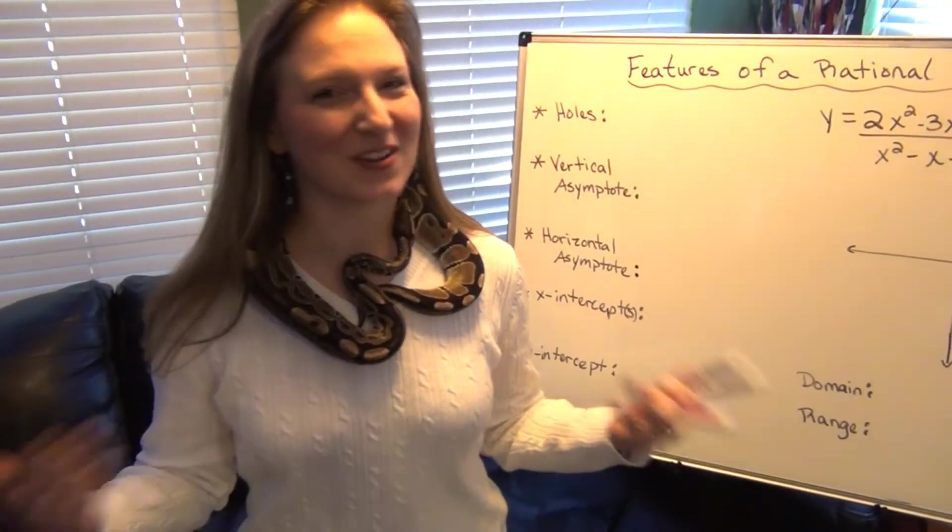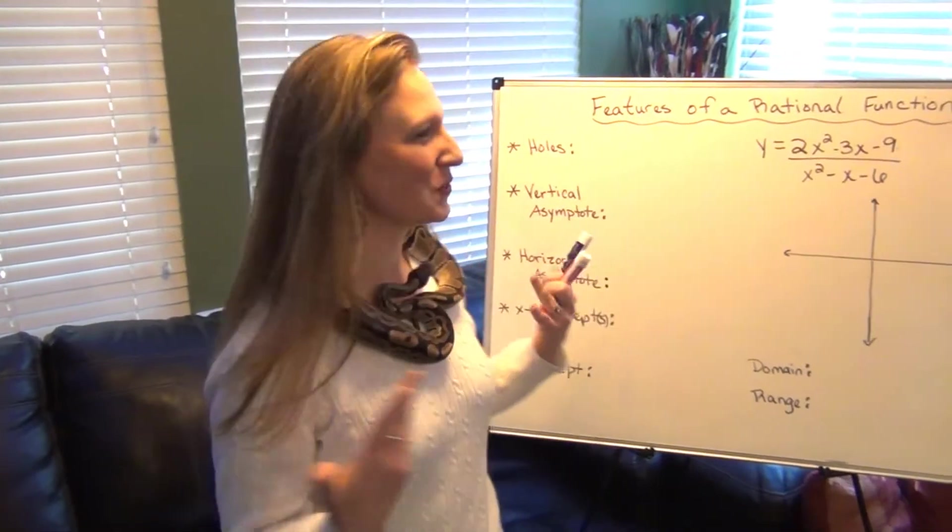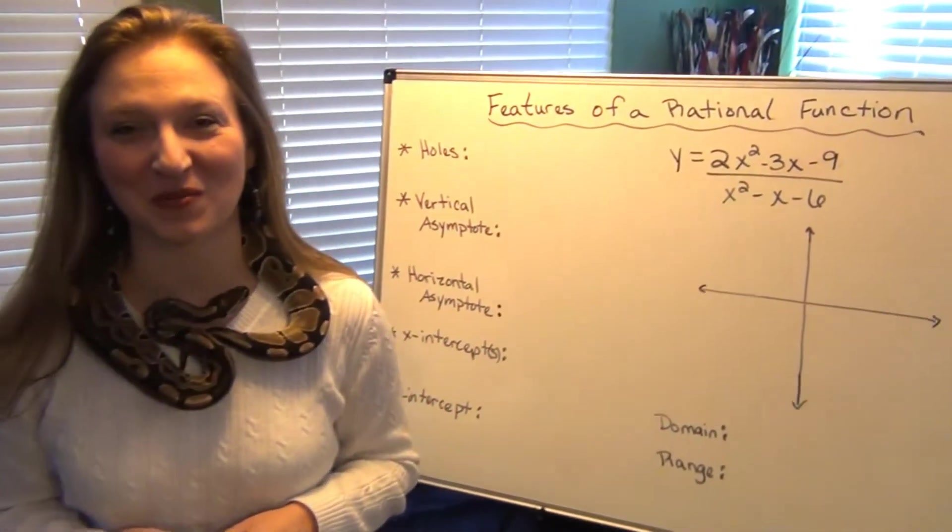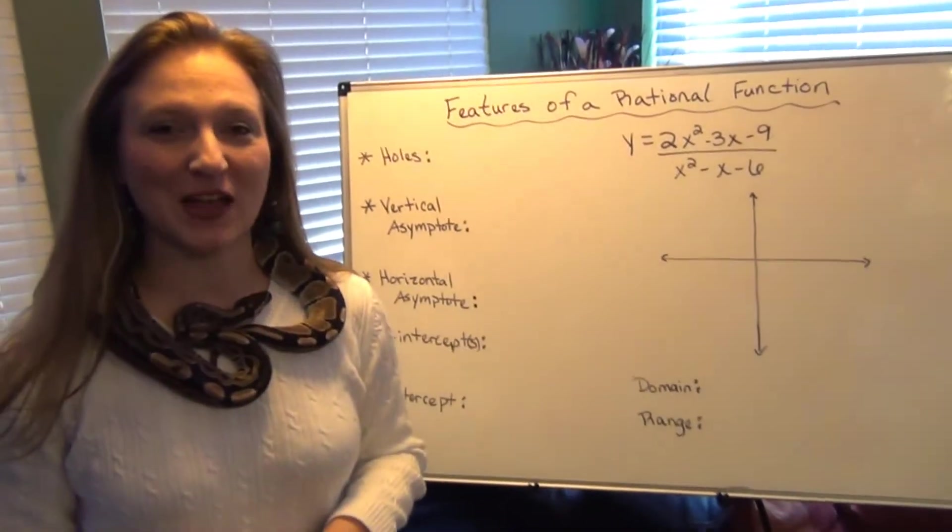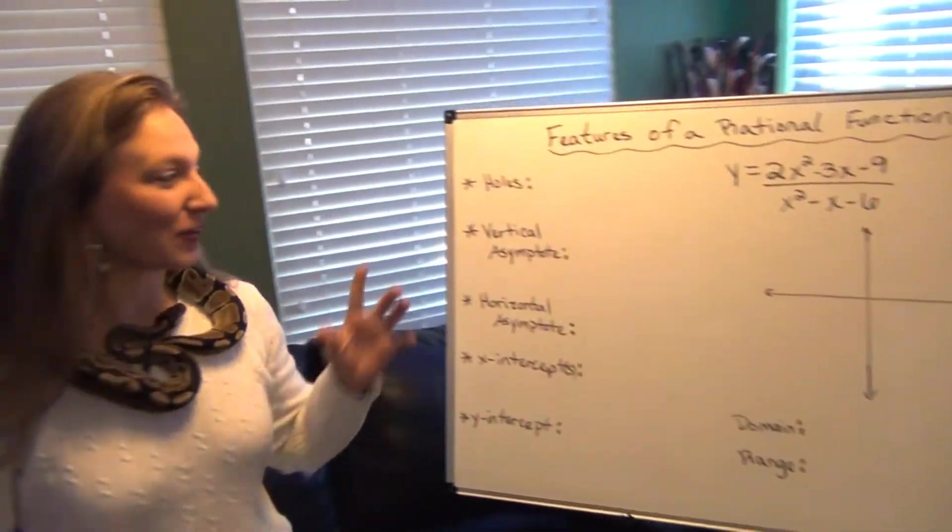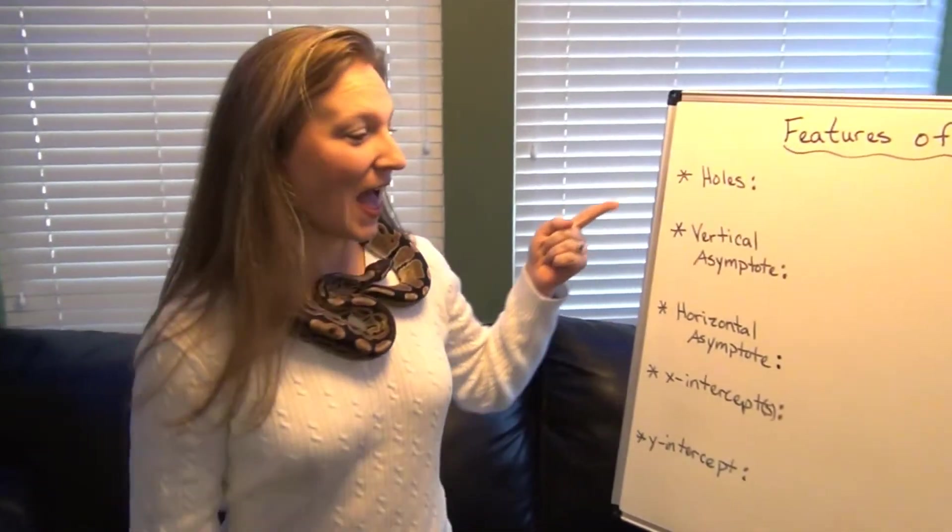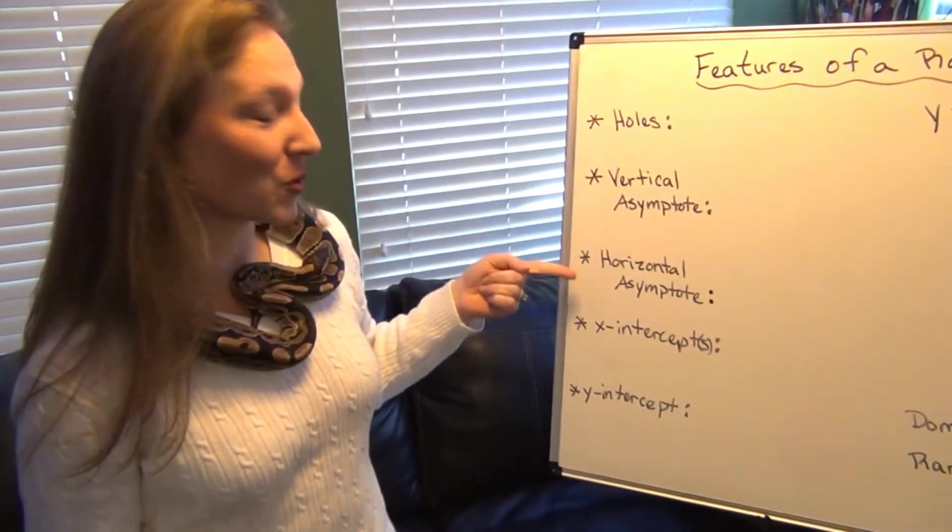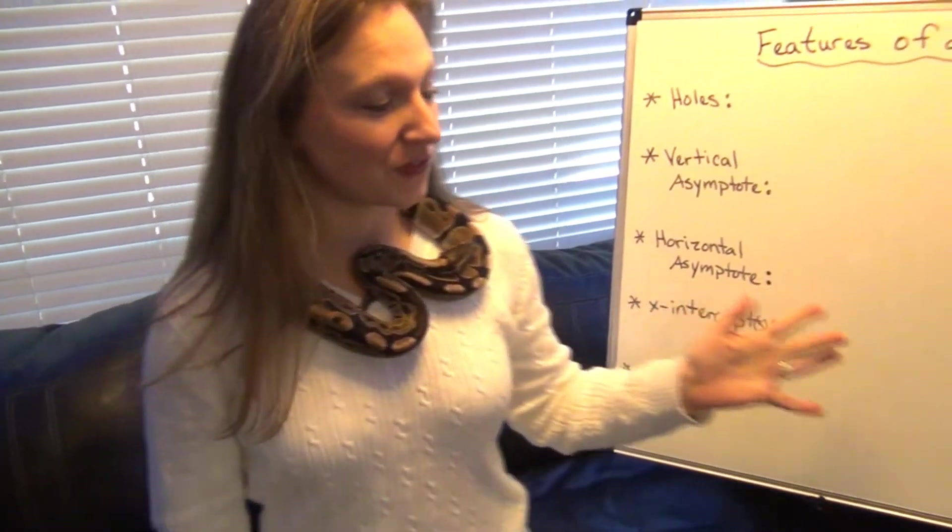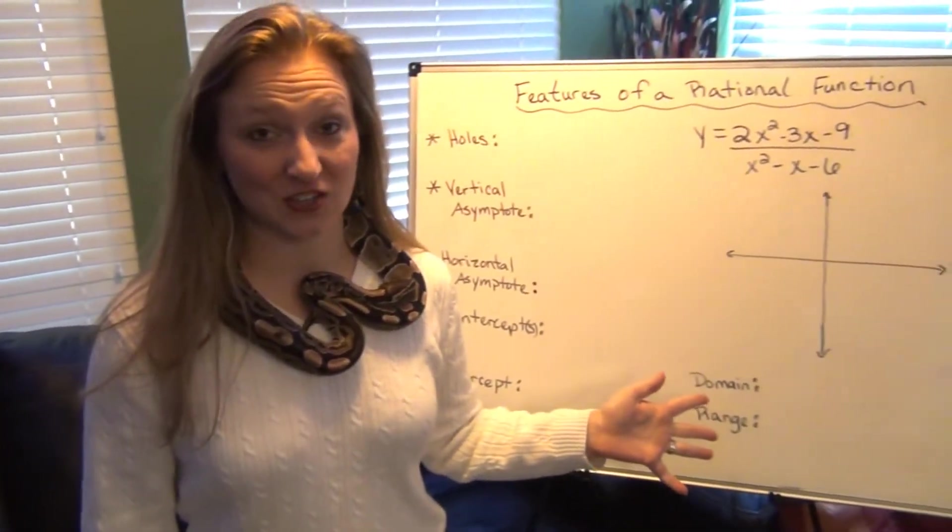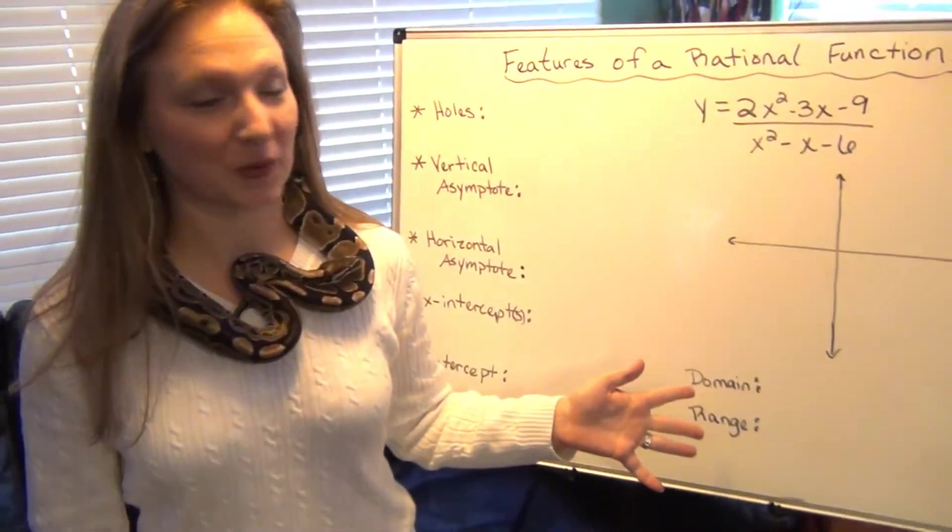Hey everybody! Today Gordon and I are going to teach you about all the features of a rational function. So here is an example of a rational function and we're going to talk about how to find the holes, how to find the vertical and the horizontal asymptotes, how to find the intercepts, and then finally how to do the domain and range. So we have a lot to cover for this one example.